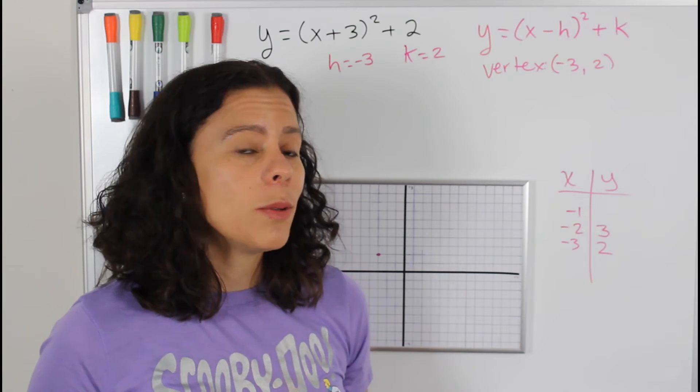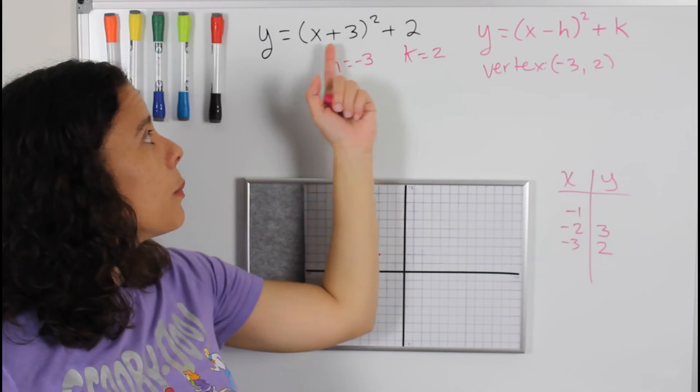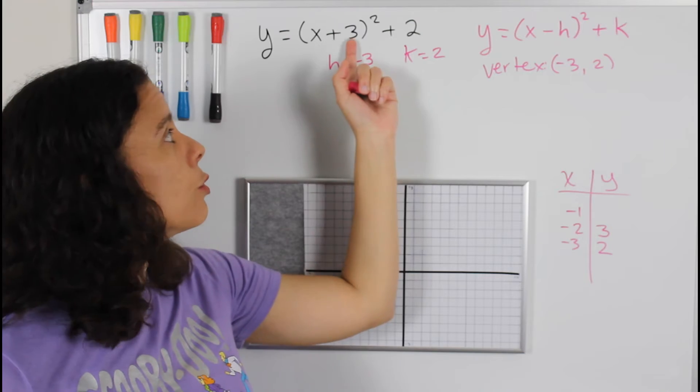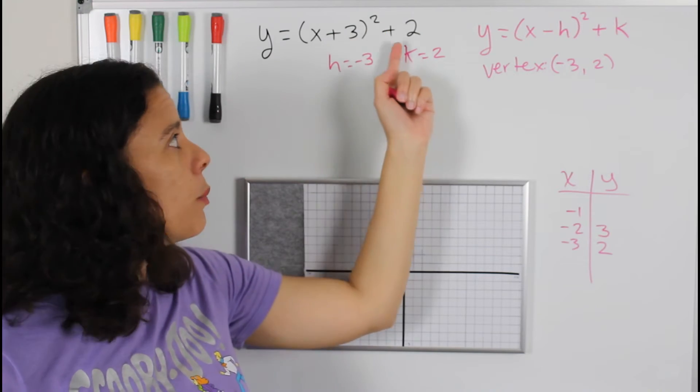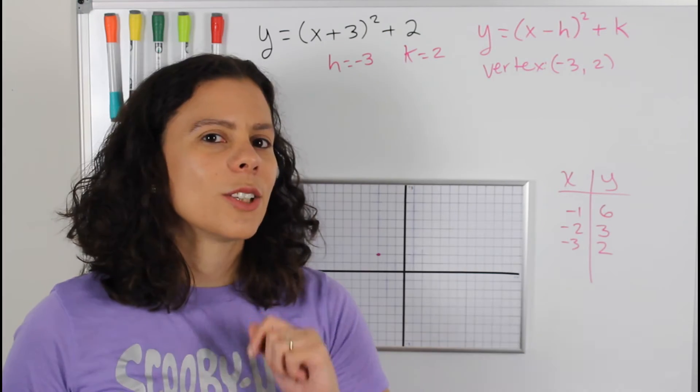And then we do the same thing with the negative one. Negative one plus three is two. Two squared is four plus two is six. So let's go ahead and graph them.